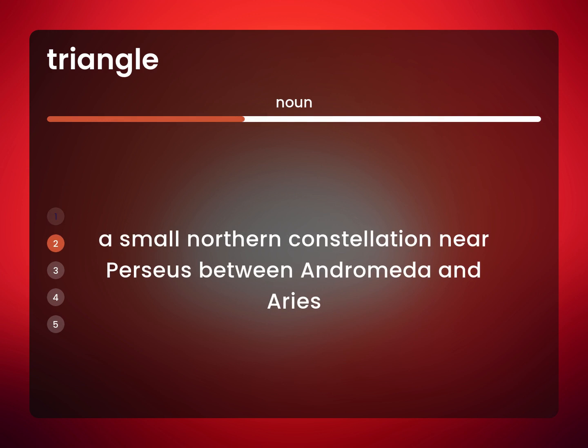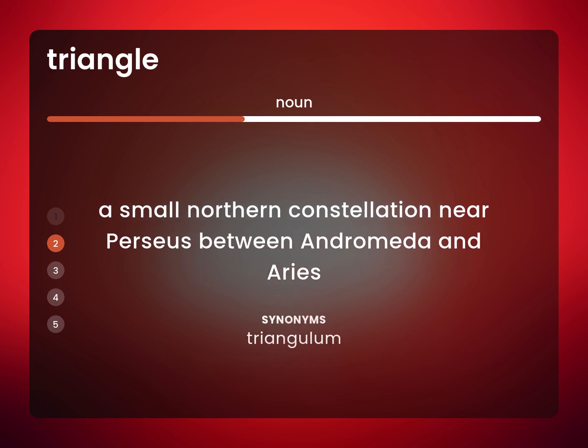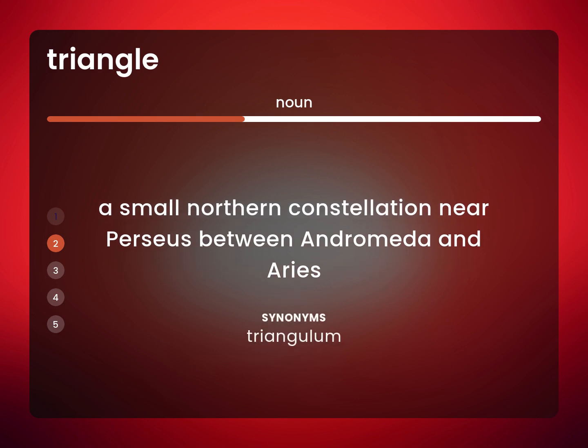A small northern constellation near Perseus, between Andromeda and Aries. Triangulum.